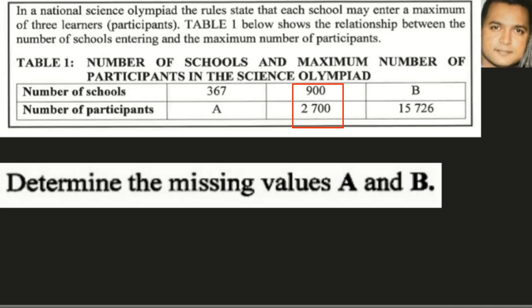We are given a table that tells us there is a maximum of three participants per school. Looking at the relationship, we can see that the number of schools have been given to us except for A and B. Generally, we look at the relationship between the different items on a table when given a question like this, and we go to the values already provided.